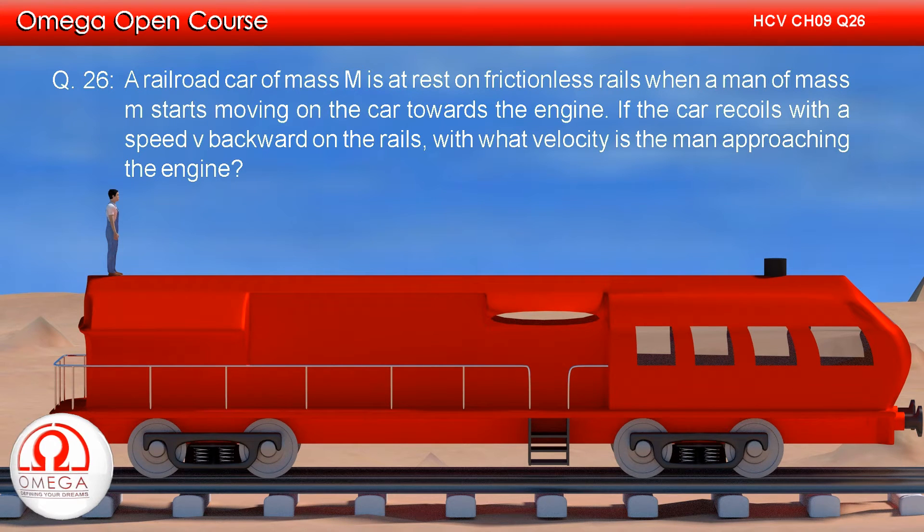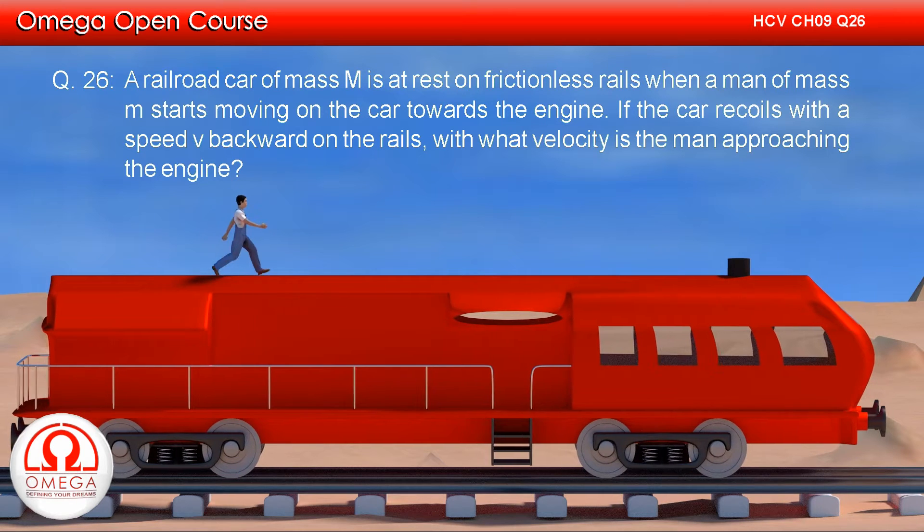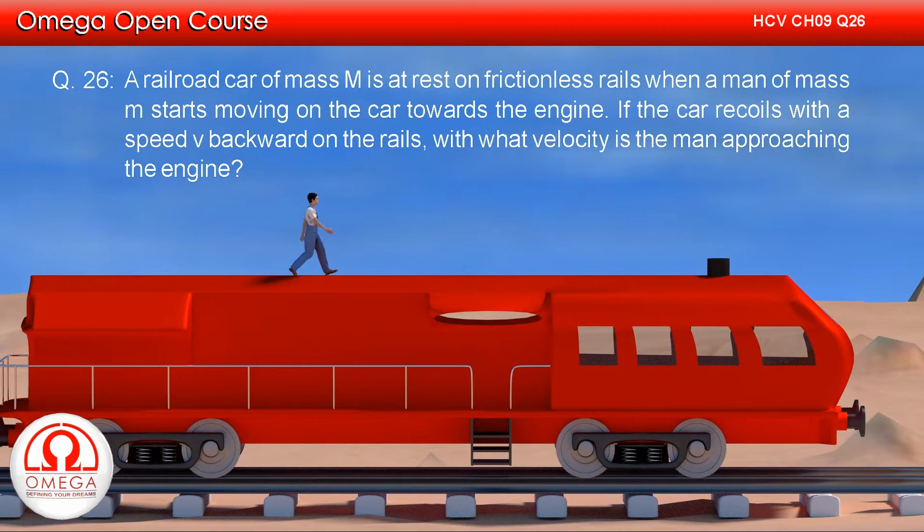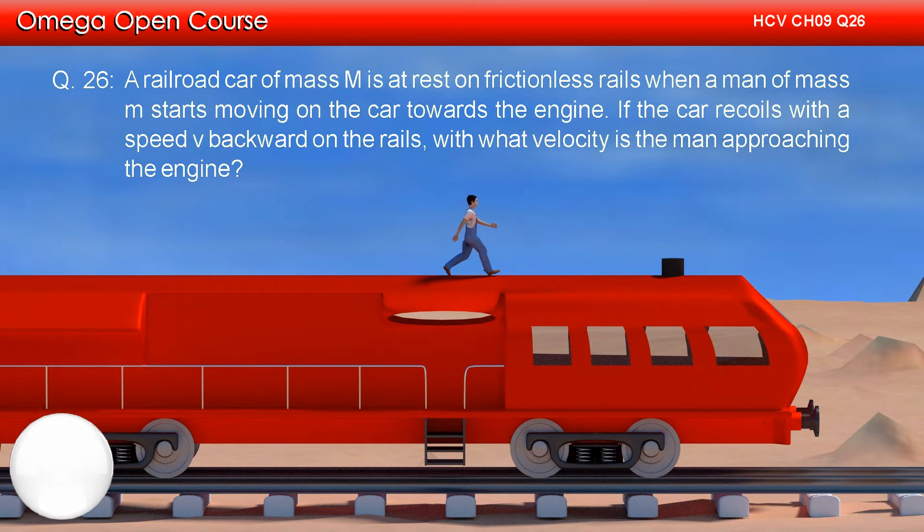A railroad car of mass capital M is at rest on frictionless rails when a man of mass m starts moving on the car towards the engine. If the car recoils with a speed v backwards on the rails, with what velocity is the man approaching the engine?